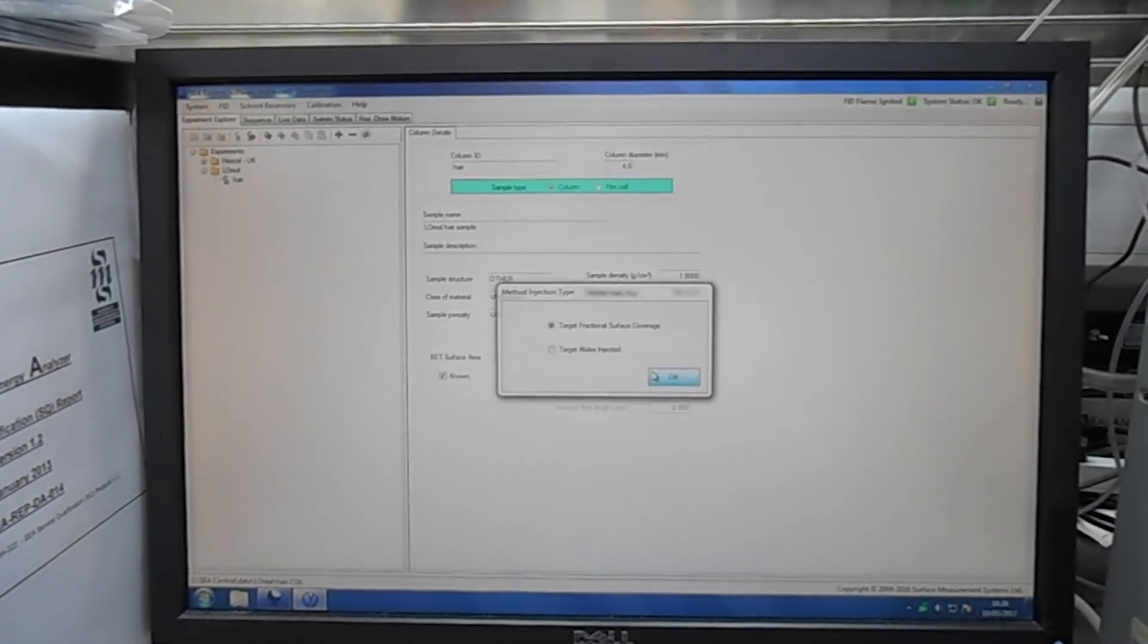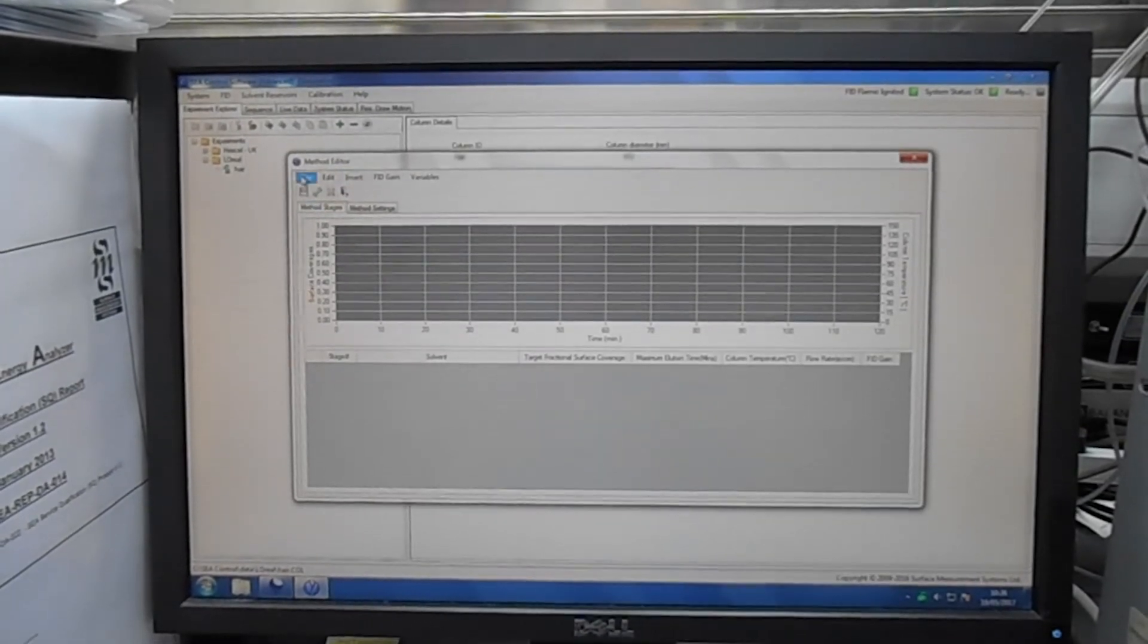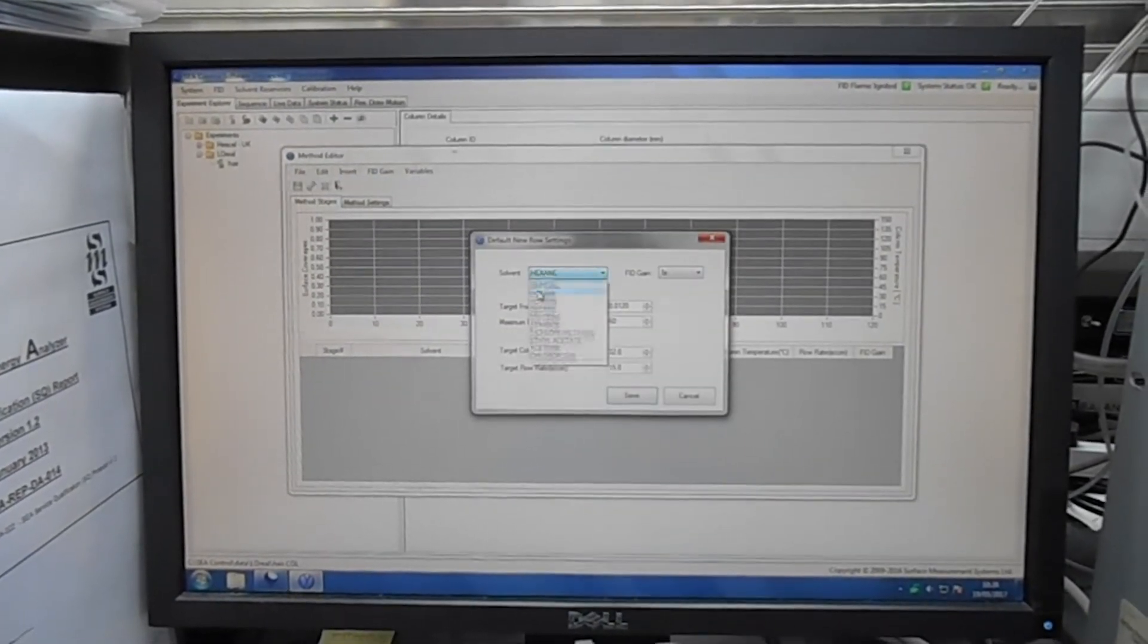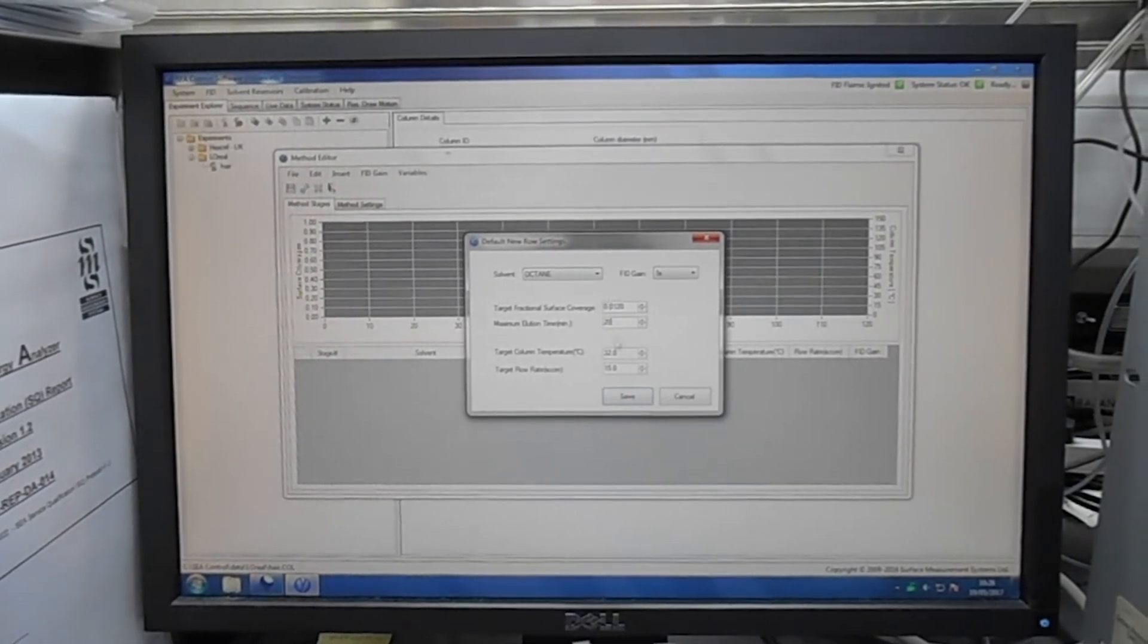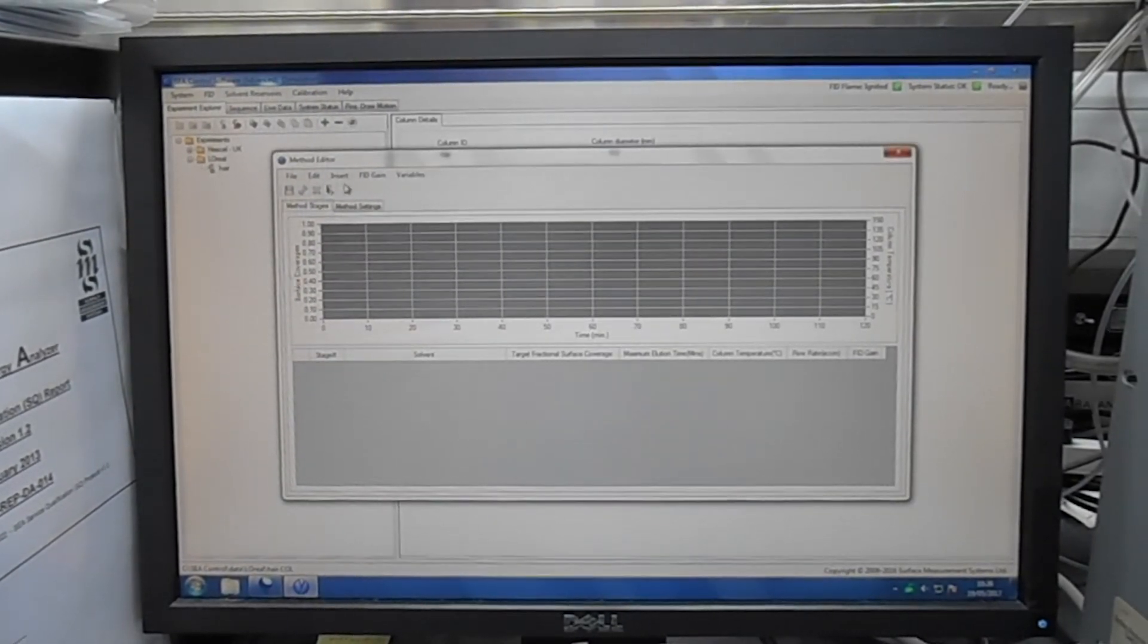What I am going to do now is show you how to generate a simple method for measuring BET surface area. The BET surface area characterization is usually carried out using octane as main solvent.